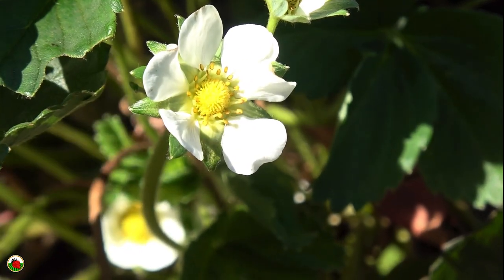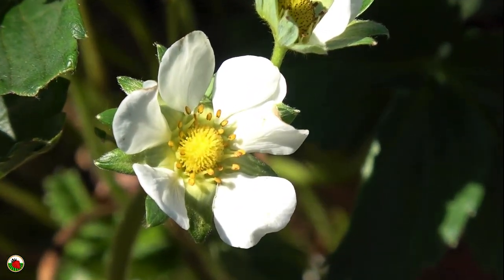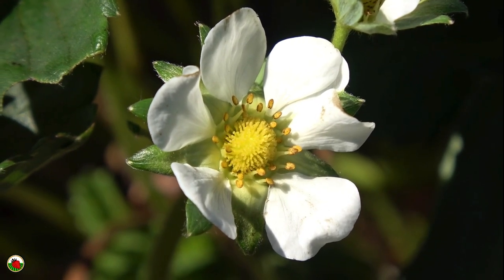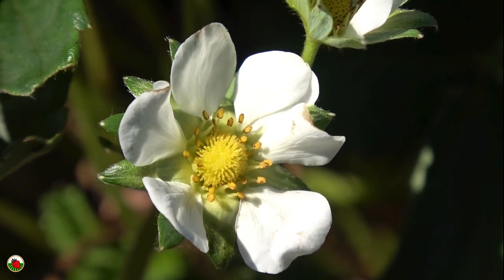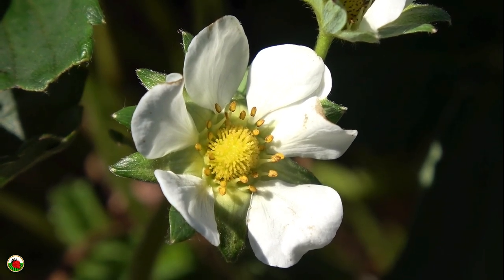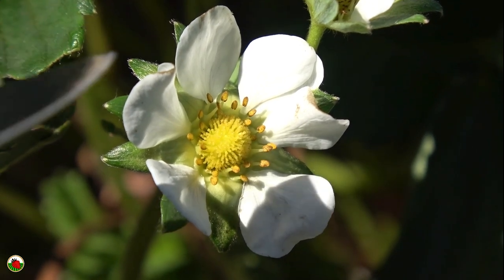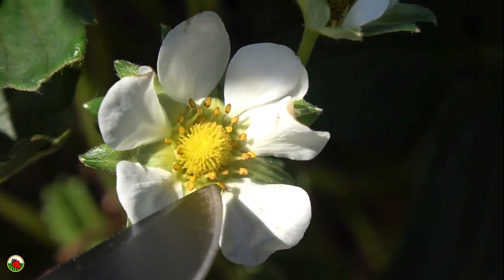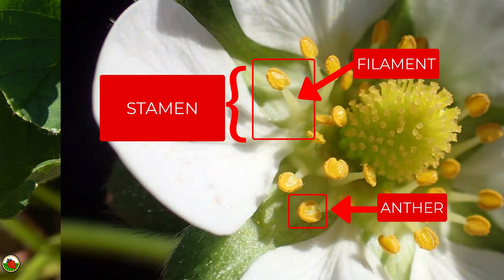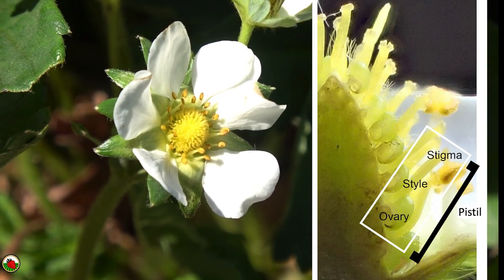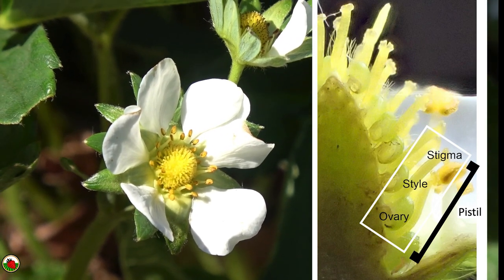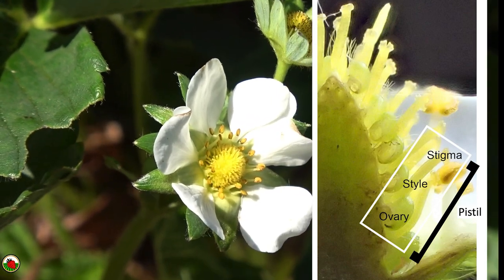The receptacle is what will eventually become what we commonly call the fruit. Fruit isn't the correct botanical term, but let's not get sidetracked on that right now. Another structure arranged in a circle around the receptacle is the stamens. Each stamen is comprised of the filament, or stalk, and the anther, which bears the pollen. The anther and filament make up the stamen, which is the male part of the flower. Like the stamen, the pistil is comprised of individual parts: the stigma, the style, and the ovary.